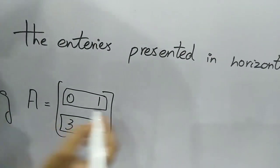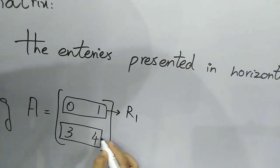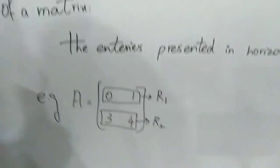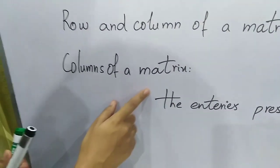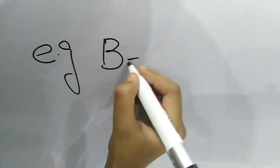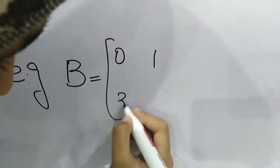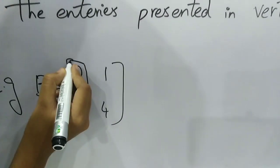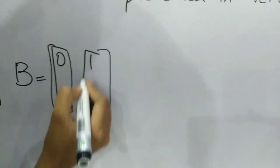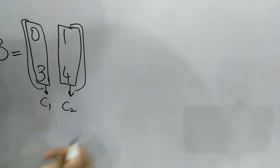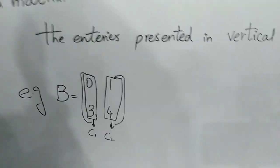The entries presented in horizontal way are called rows of a matrix. We can name them R1 and R2. Now I will tell you what columns of a matrix are. The entries presented in vertical way are called columns of a matrix. For example, in matrix A with entries 0, 1, 3, and 4, the vertically arranged entries are called columns.